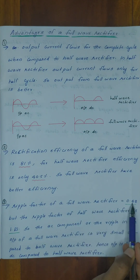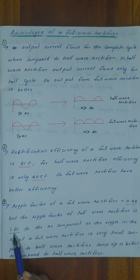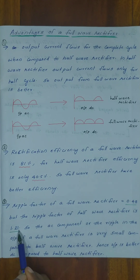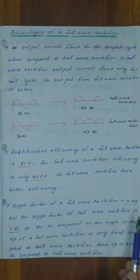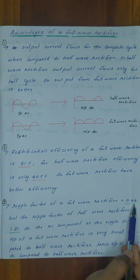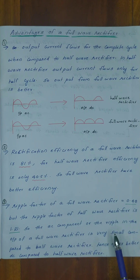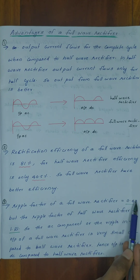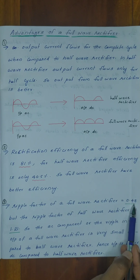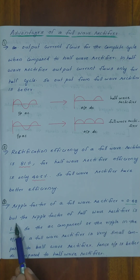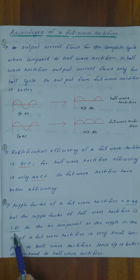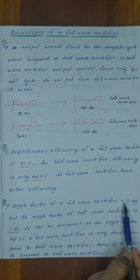The ripple factor in a full wave rectifier is 0.48, whereas in a half wave rectifier it is 1.21. This means the ripple is lower in a full wave rectifier, hence the output DC is better and cleaner with a full wave rectifier.